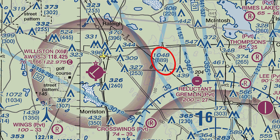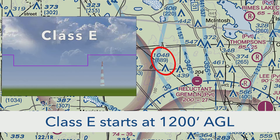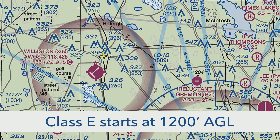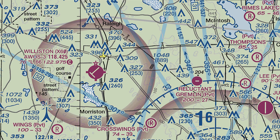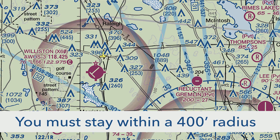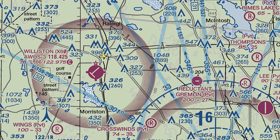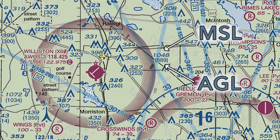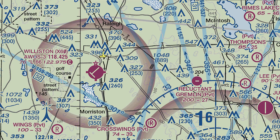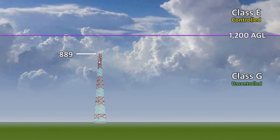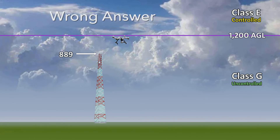The tower in question is clearly outside of the magenta outline, so we know that it lives in Class G, with Class E starting above it at 1,200 feet AGL. Here's your question: you are planning an aerial inspection of this tower with your quadcopter. You know that you can fly above it as long as you stay within a 400-foot radius. The top of the tower is 889 feet AGL — or 1,048 feet MSL. How high may you legally fly above it under Part 107? The answer originally given was 1,200 feet, with the logic that flying above the tower puts the aircraft in Class E, so you could go no higher without an airspace authorization. Clearly, not the right answer.